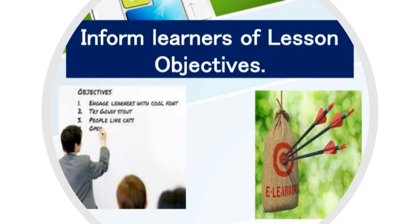The second of these nine events is to inform the student of the objectives. We establish expectations for the course and the criteria, so the student understands how we're going to measure for success or failure — remembering that failure is just the first attempt in learning.